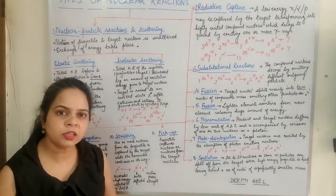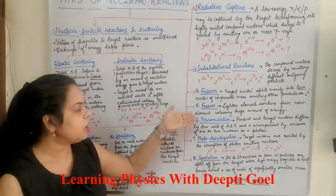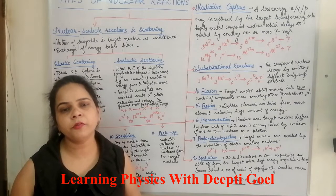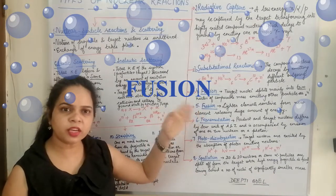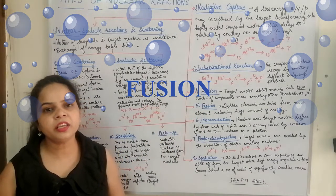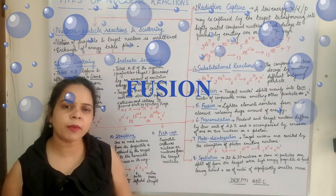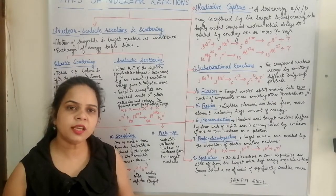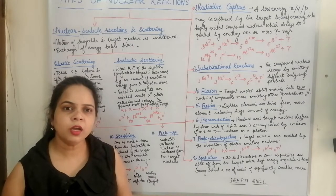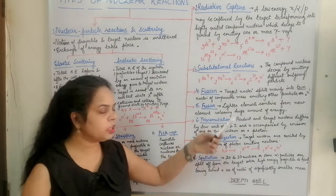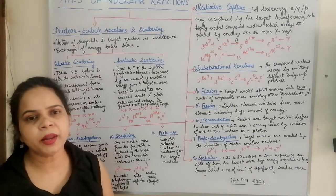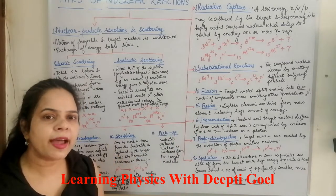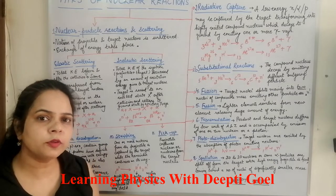The opposite of fission is the fusion reaction, where lighter elements combine together to form a new element, releasing a large amount of energy. The most famous example is the reaction taking place in the sun, where hydrogen isotopes fuse together to form helium. The sun is therefore a source of a large amount of energy through fusion.